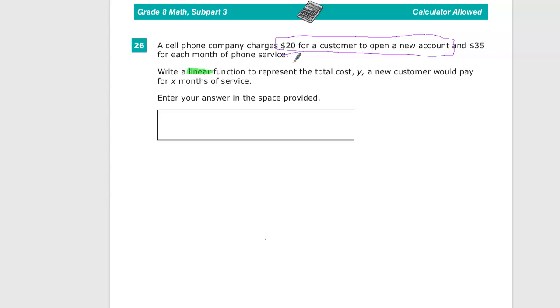The linear equation here is for a new customer to pay for x months of service. But they only have one account. So you only pay that $20 one time. So if I'm going to use my y equals mx plus b scenario, that constant one-time thing is right here.